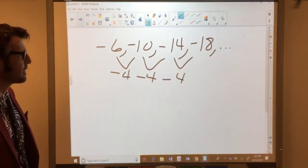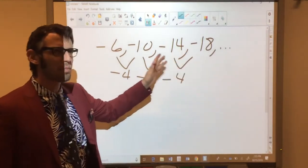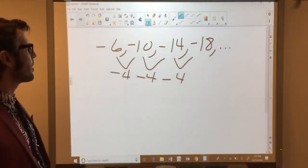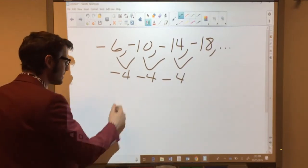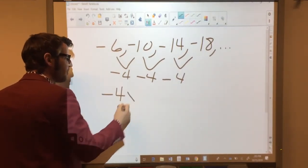That is occasionally an issue for people because they think they look like they're getting bigger, but in actuality they're moving further to the left, they are getting smaller. So in this case, if we wanted to finish this problem, we have a slope of negative 4.